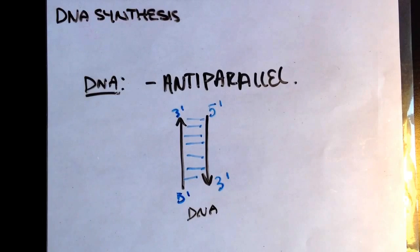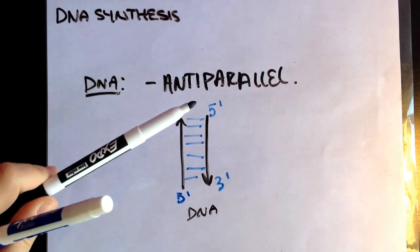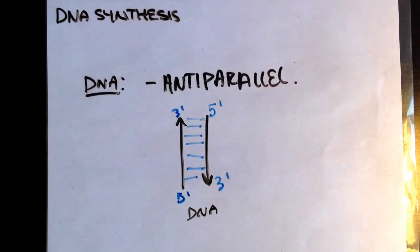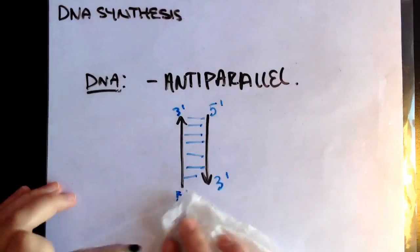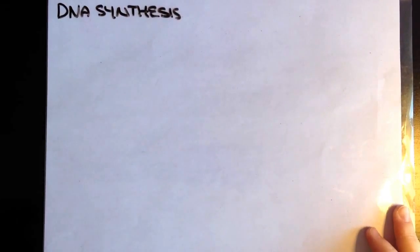So if I have one strand being 3', the opposite strand is going to be 5'. That gives you an idea of anti-parallel. So 5' to 3' going up, 5' to 3' going down — anti-parallel. Now that you know that, we'll go over the actual concept of the leading strand and lagging strand.